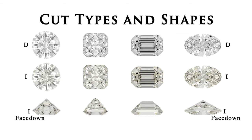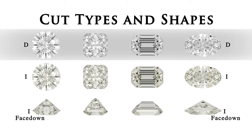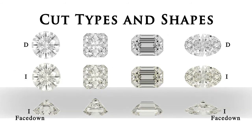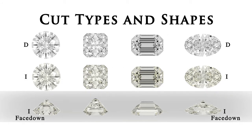In this chart all of the stones are one carat. In the top row they are all D, or colourless. The next row is all I, or tinted colour — and that's the face up view. The row below that is the face down view.